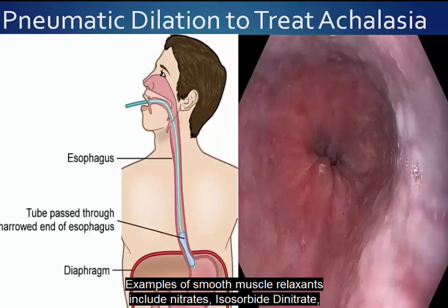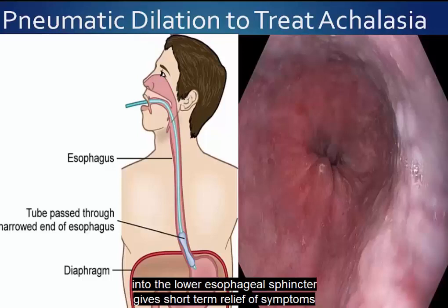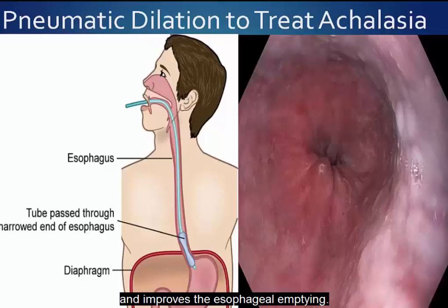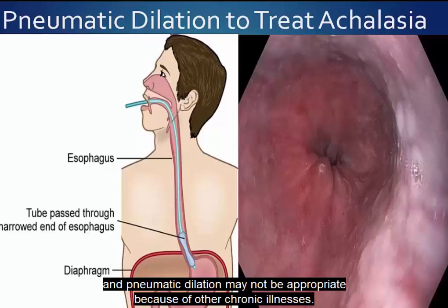Examples of smooth muscle relaxants include nitrates, isosorbide dinitrate, and calcium channel blockers like nifedipine. The injection of botulinum toxin endoscopically into the lower esophageal sphincter gives short-term relief of symptoms and improves esophageal emptying by promoting relaxation of the smooth muscle. This treatment is used for older patients for whom surgery and pneumatic dilation may not be appropriate due to other chronic illnesses.